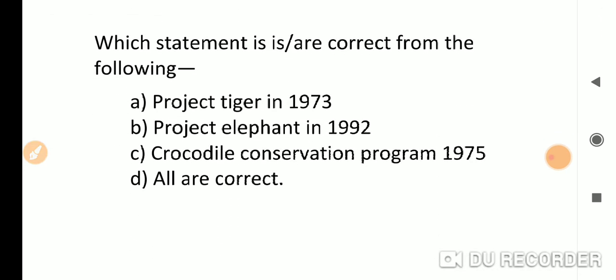Which statement is correct? Project Tiger 1973 is correct, Project Elephant 1992 is also correct, Crocodile Conservation Program 1975 is also correct. So the correct answer is all are correct.